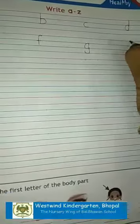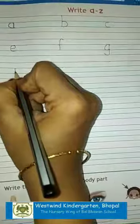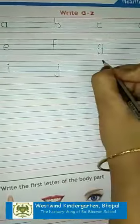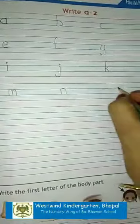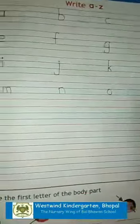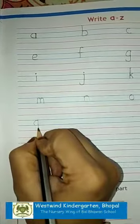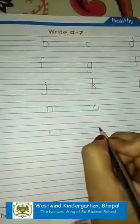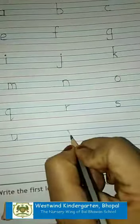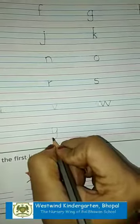Then H, starting from the first red line, we are going to make a standing line and curve. Then I. J, like this. K. L. M, using two lines only, standing line, curve and curve. Then N. O. P. Q, curve and then standing and then slant. R, standing and curve, little curve. S. T. U. V. W, using only two lines. X. Y. And Z.